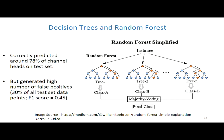The random forest method correctly predicted around 78% of the channel heads on the test set, but it also generated a lot of false positives. In this case, accuracy is not a good measure to evaluate our model — F1 score is. And an F1 score of 0.45 is not a very good value.